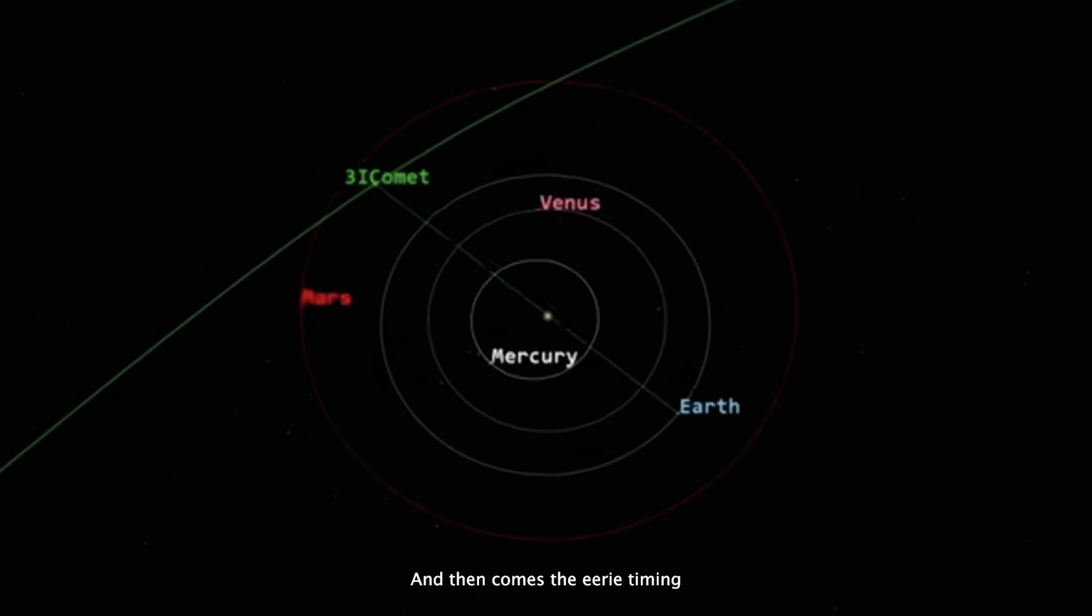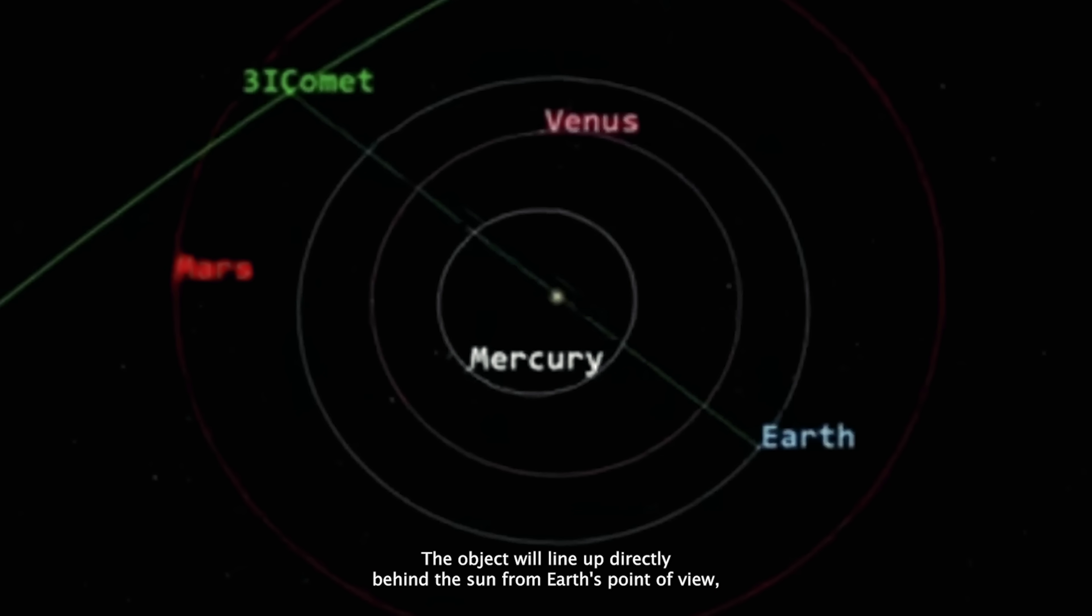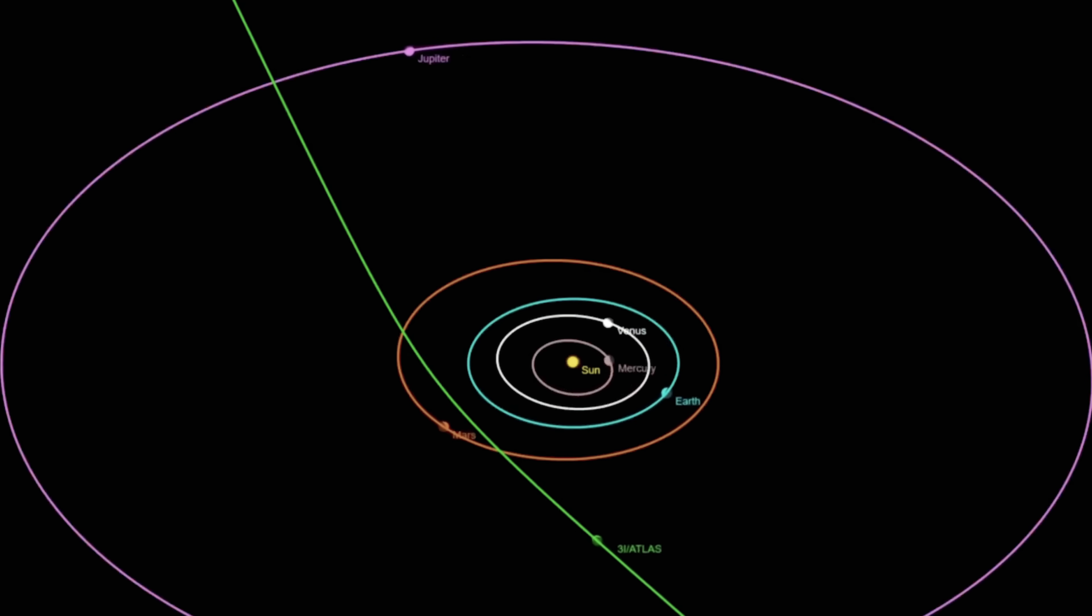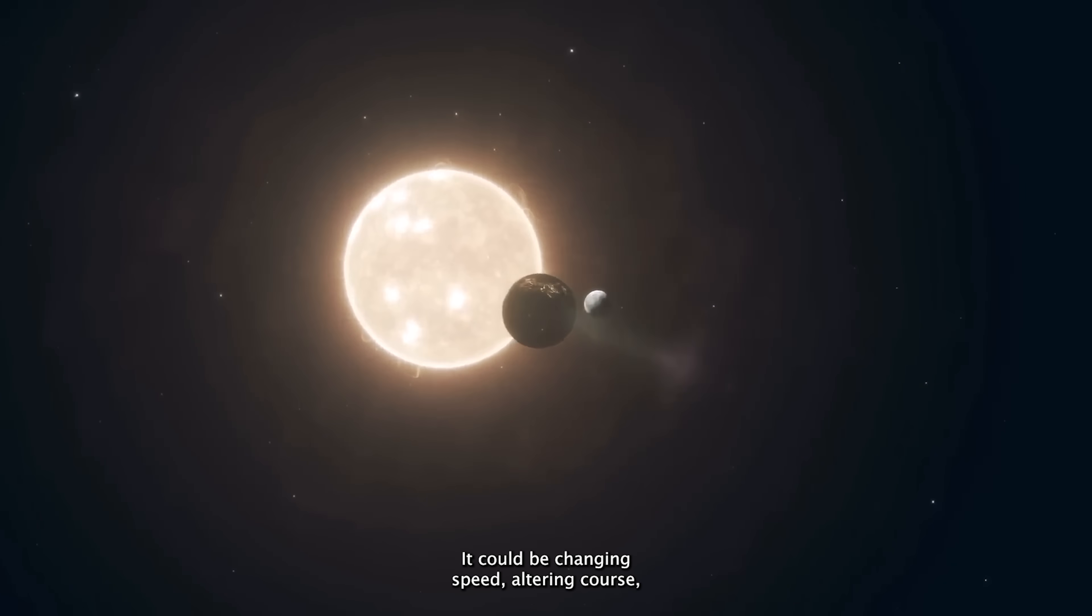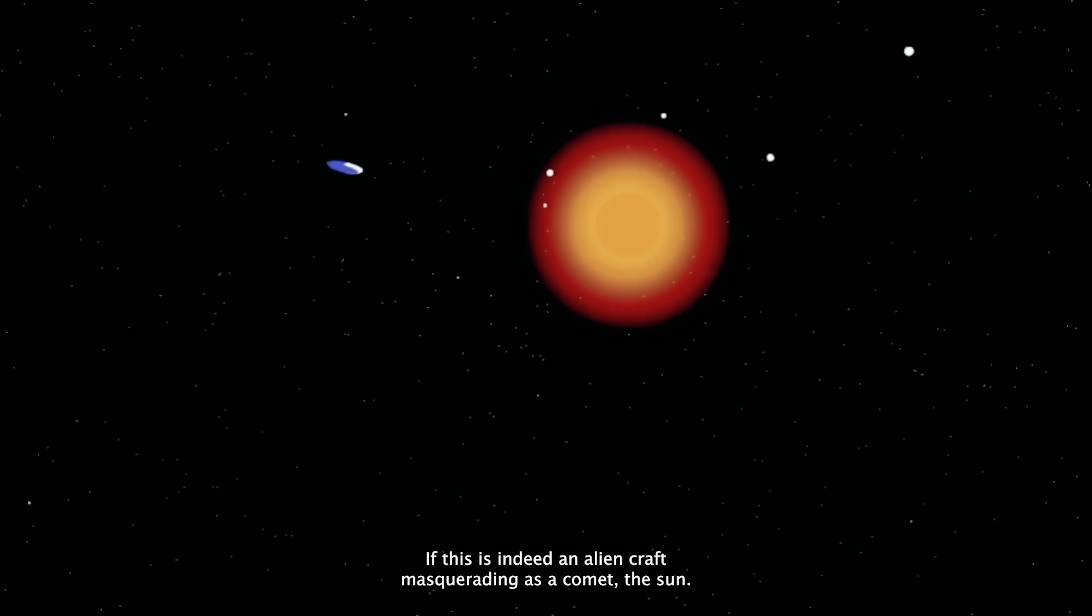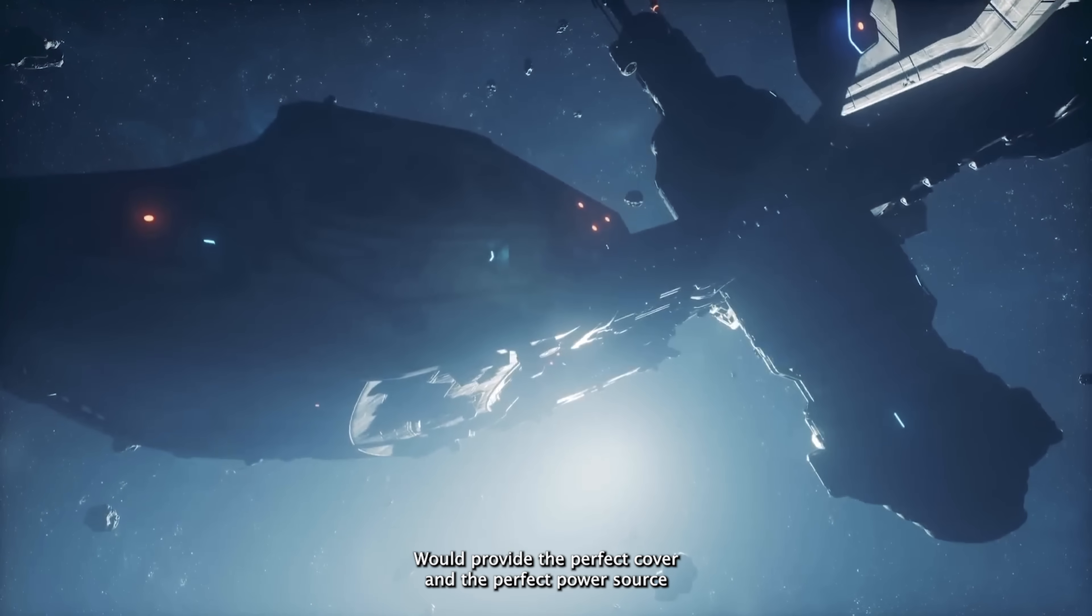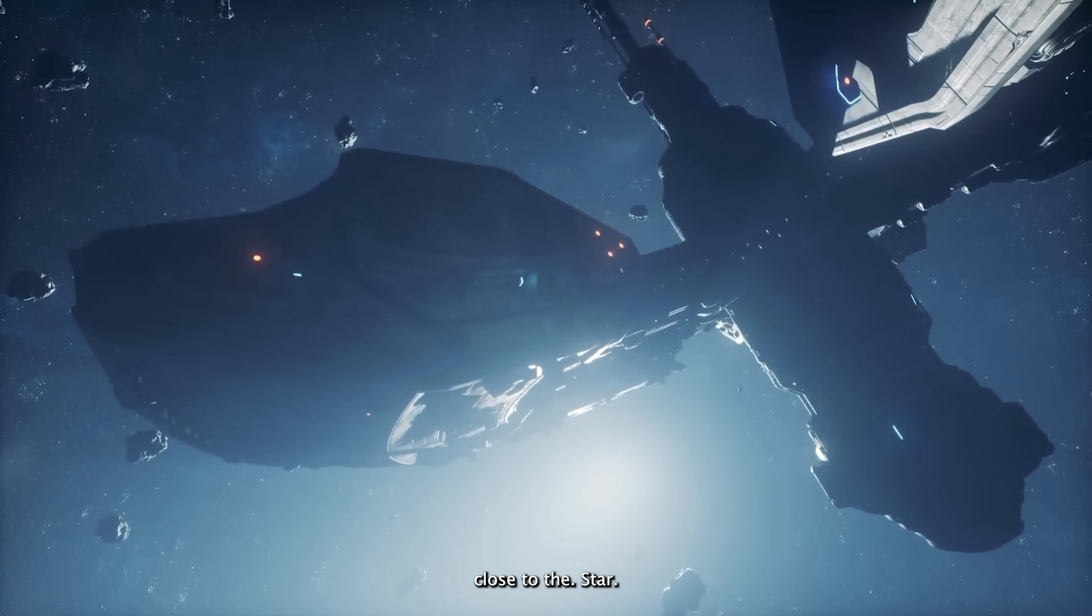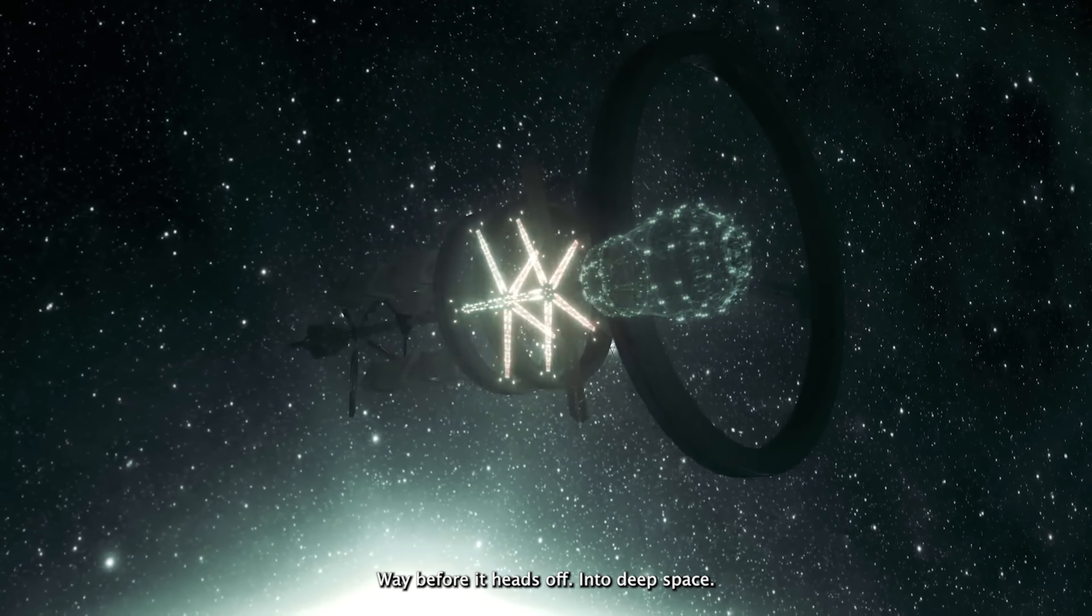And then comes the eerie timing. At perihelion, its closest point to the Sun, the object will line up directly behind the Sun from Earth's point of view, as if slipping into a cosmic blind spot. That means our telescopes will be blinded by the Sun's glare at the exact moment it could be changing speed, altering course, or even deploying smaller probes, and we'd never see it. If this is indeed an alien craft masquerading as a comet, the Sun would provide the perfect cover and the perfect power source. Close to the star, it could be recharging, harvesting solar energy, or even refueling in some unknown way before it heads off into deep space.